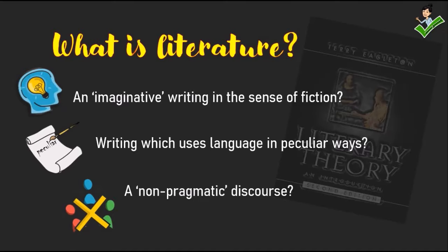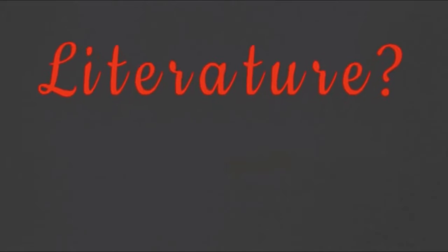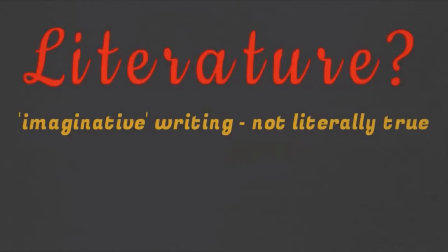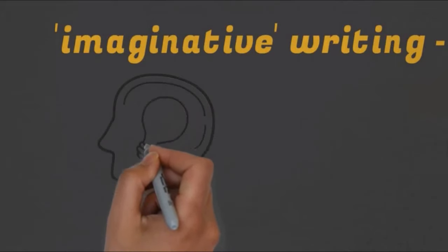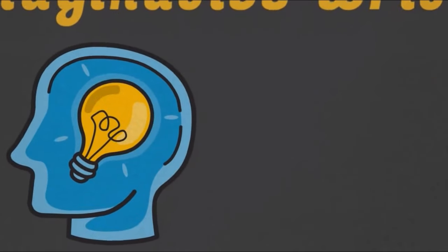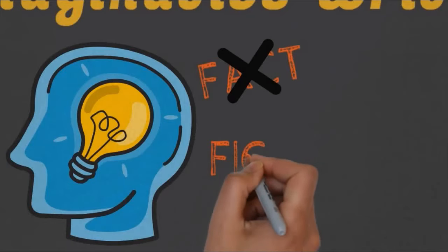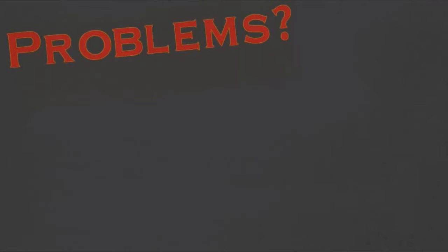The first definition, found on the first page of this essay, refers to literature as imaginative writing which is not literally true. When we elaborate on imaginative writing, the idea is that the product of literature is imagination — we create something in our mind. It means it cannot be based on fact, because it's the product of our imagination. It is fiction, a story which is unreal.